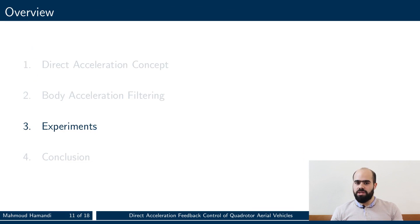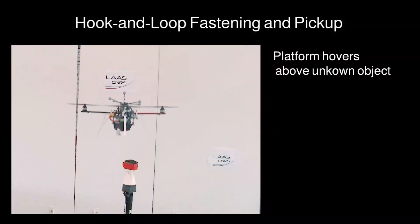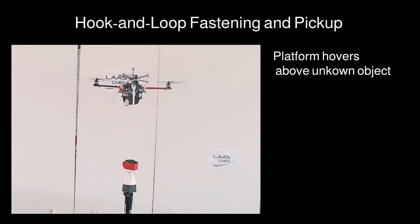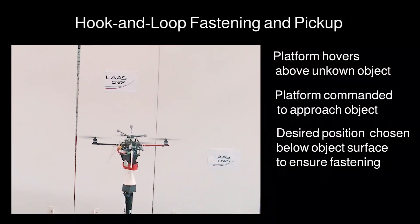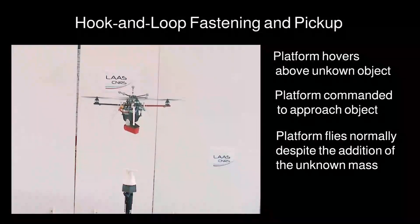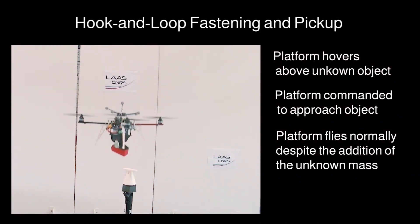In the following slides, we try to assess the controller performance in real-world scenario experiments. In this first experiment, we ask the platform to approach and pick up an object of unknown mass. This experiment shows that despite the change in mass, the controller flies the platform normally, since it does not require an accurate knowledge of its weight.